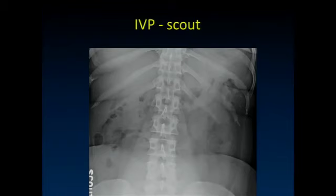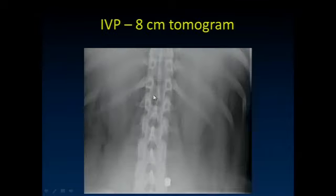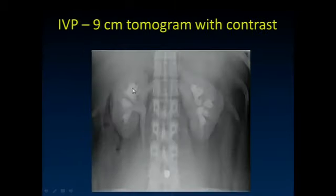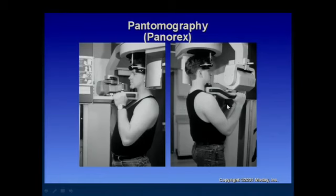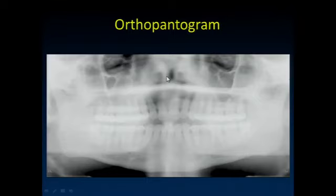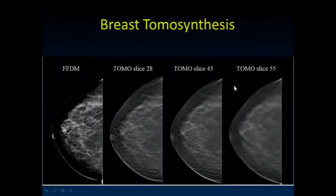When I started residency in 2001-2002, we used to do a lot of intravenous pylograms. We'd take an image of the patient, guess how deep the kidneys were, do a tomogram, and verify the depth before giving contrast. These are some conventional tomography type images done before CT. How many people have a panorex unit? That's another type of conventional tomography, where we rotate the x-ray tube and imaging device together to get an image with the plane of the mandible in good focus. Breast tomosynthesis is also a type of conventional tomography.